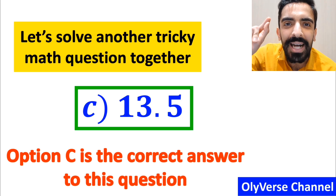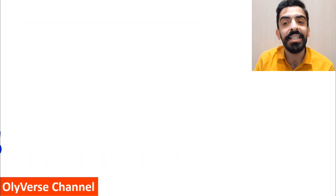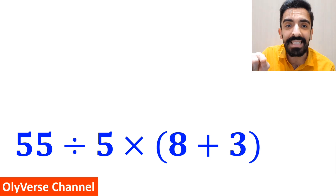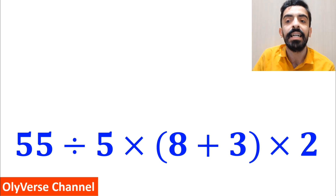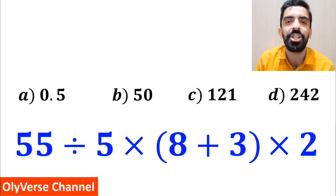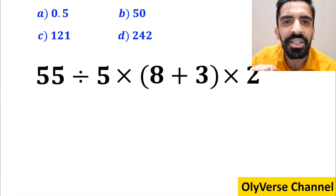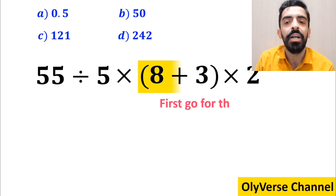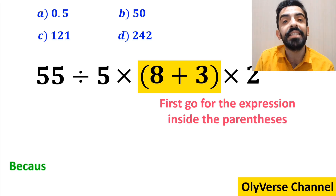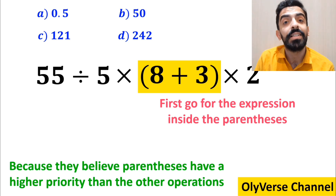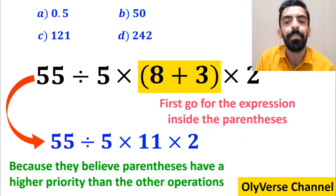Now let's solve another tricky math question together. What is the value of the expression 55 divided by 5, multiplied by open parenthesis 8 plus 3 close parenthesis, and again multiplied by 2? Many people, when trying to solve this question, first go for the expression inside the parenthesis, because they believe parentheses have a higher priority than other operations. So they simplify to 55 divided by 5 times 11 then multiplied by 2.